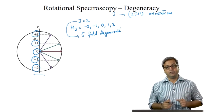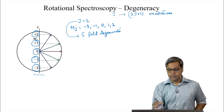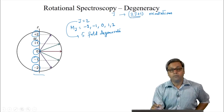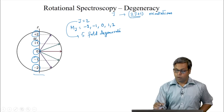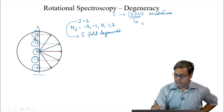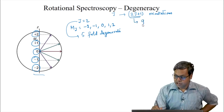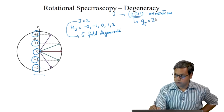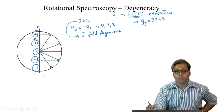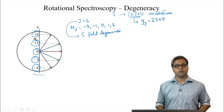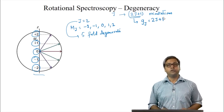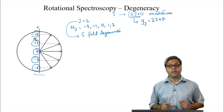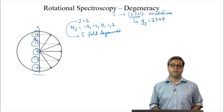The jth level is 2j plus 1 fold degenerate, or we can write the degeneracy gj equals 2j plus 1, because we have looked into space quantization in the last lecture.